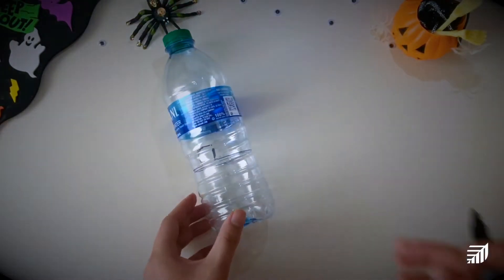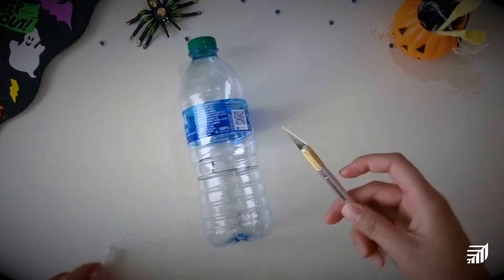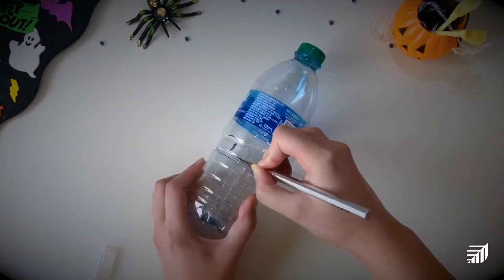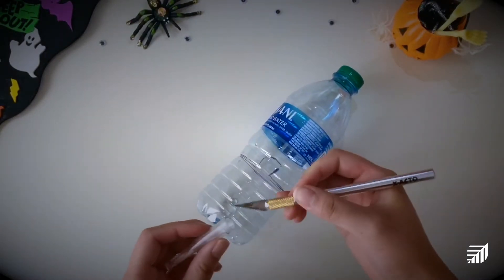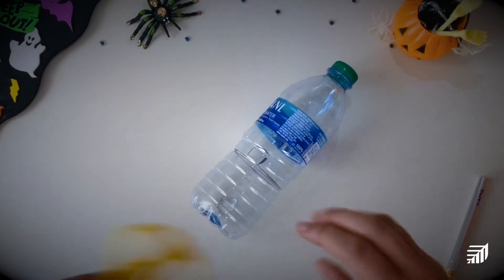In this next part we're going to be cutting the water bottle using our exacto knife and scissors. If you're a child please go and get an adult for help with this. What I like to do is use the exacto knife to puncture the bottle so that I can get my scissors in and then make more precise cuts around the bottle.